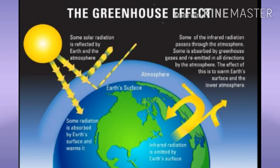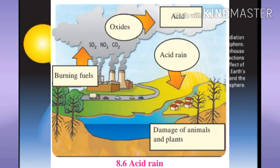Due to this, the atmosphere is changing, causing disturbances in agricultural yield and distribution of wild animals. Icebergs and glaciers are melting, causing an increase in sea level.